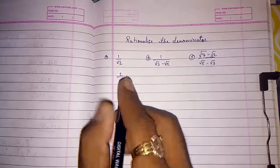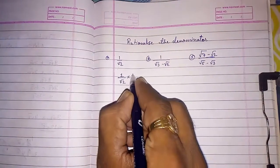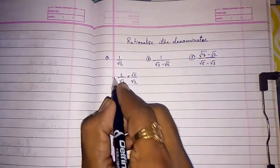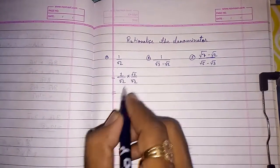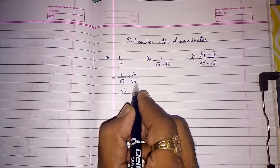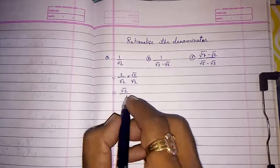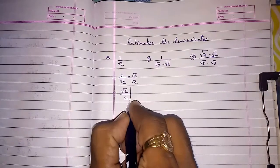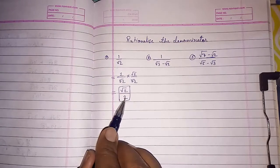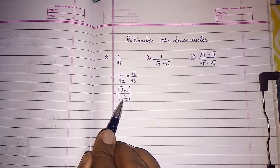Look here now. Root two by root two. So, you will get root two into one, root two and root two into root two means root four or you can say root four gives you two. So, this is your final answer. You can see here, root is not in denominator and we have to do that.